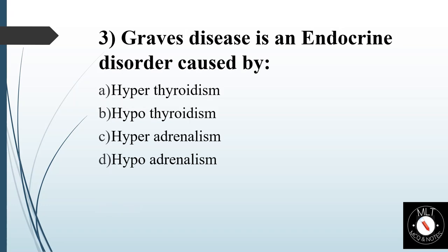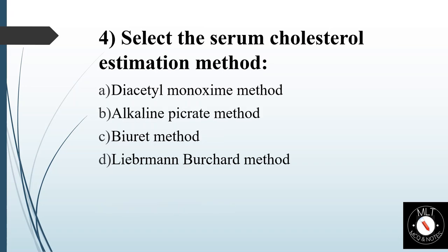Third question. Graves' disease is an endocrine disorder caused by. Option A: Hyperthyroidism. Option B: Hypothyroidism. Option C: Hyperadrenalism. Option D: Hypoadrenalism. Answer is Option A: Hyperthyroidism.